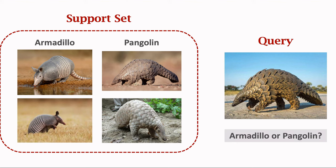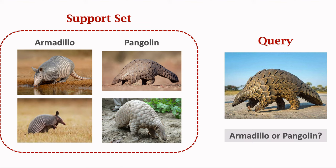If a class has only two samples, can a computer make the correct prediction? This is harder than the standard classification problem — the number of samples is too small for training a deep neural network. Please keep the terminologies in mind: support set and query. The support set is a small set of samples — it is too small for training a model. Few-shot learning is a problem of making predictions based on a limited number of samples.